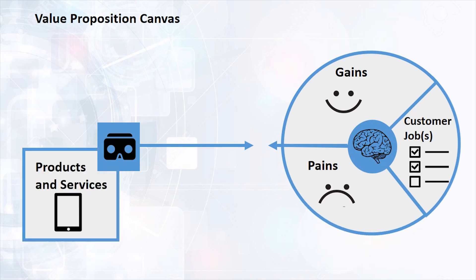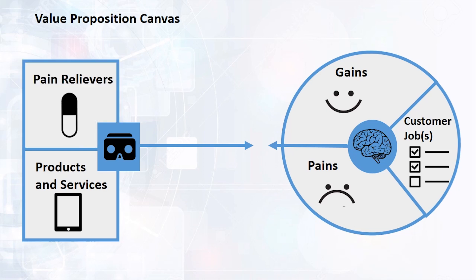The second part of the canvas is the Value Map. With it we will list our products and services the Value Proposition builds on. We will describe the way these products, services and features are pain relievers and how they eliminate, reduce or minimise pains our customers care about.